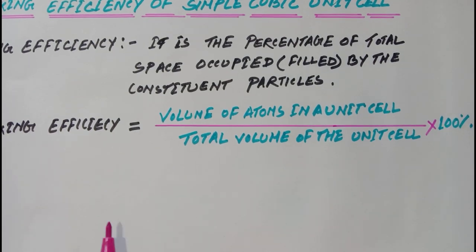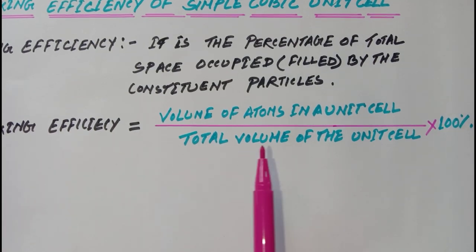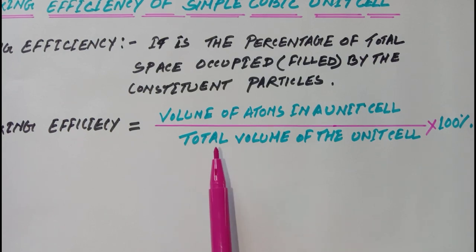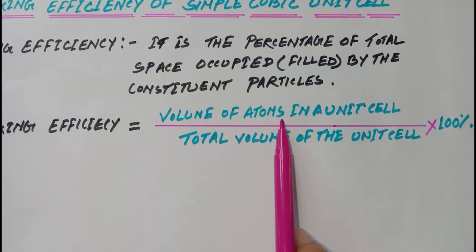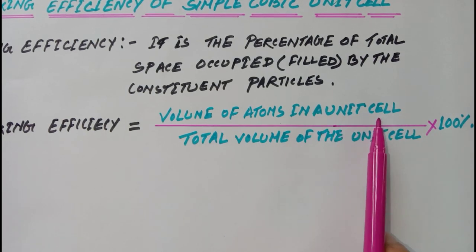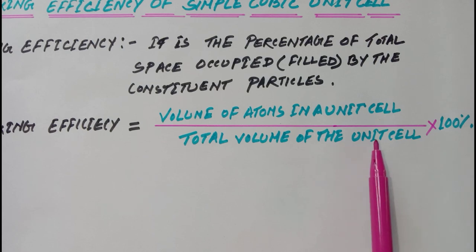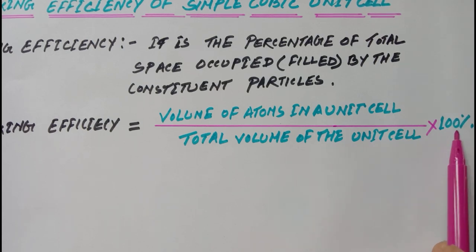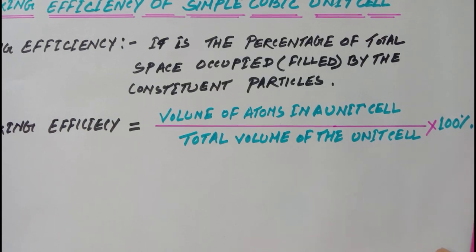We can calculate the packing efficiency by using this formula: volume of atoms in a unit cell divided by the total volume of the unit cell, multiplied by 100 percent.